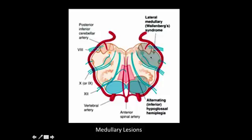The lateral medullary syndrome, or Wallenberg syndrome, is very interesting and a favorite test question. It is also called PICA syndrome because this area is supplied by the posterior inferior cerebellar artery. On the lateral side we have the ninth and tenth nuclei in the medulla, the spinocerebellar tract, spinothalamic tract, the fifth nerve spinal nucleus, and Horner syndrome.